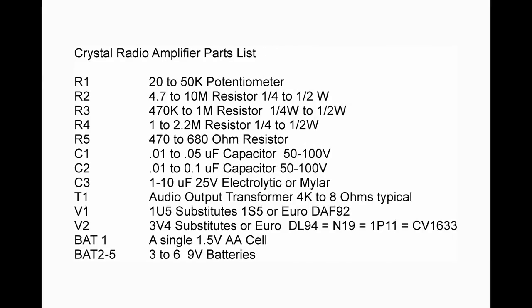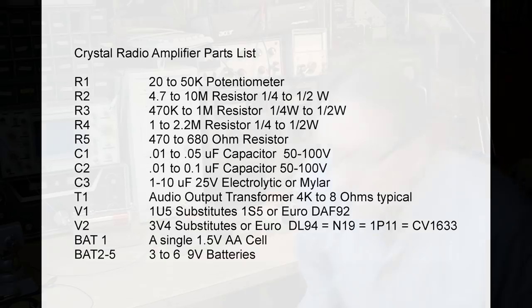Looking at the parts list, we have a pretty simple parts list really and at the end of the parts list, I've got some substitutes for the tubes listed. Some of these are European tubes and you can look in some of those old radios and find some of these tube types and try them in this circuit.